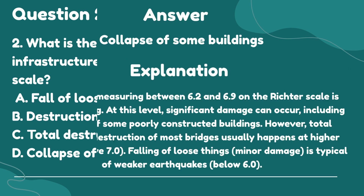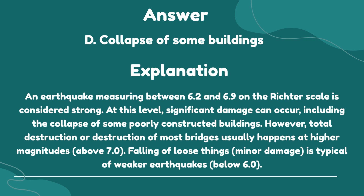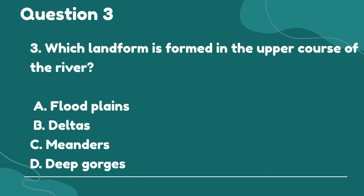The correct answer is D. Collapse of some buildings. Explanation: An earthquake measuring between 6.2 and 6.9 on the Richter scale is considered strong. At this level, significant damage can occur, including the collapse of some poorly constructed buildings. However, total destruction or destruction of most bridges usually happens at higher magnitudes, above 7.0. Falling of loose things, minor damage, is typical of weaker earthquakes, below 6.0.